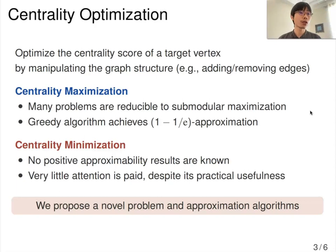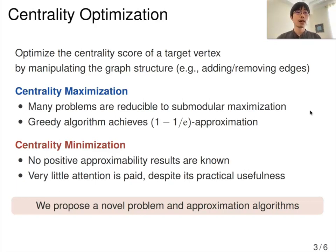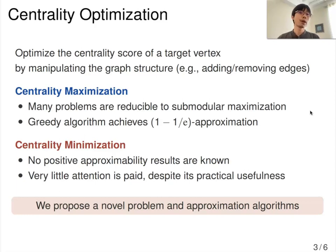In many real-world scenarios, we want to optimize the centrality score of a target vertex by manipulating the graph structure, like adding or removing edges around the target. There are two types of optimization: centrality maximization and centrality minimization. For centrality maximization, many problems are reducible to submodular maximization with a size constraint, so a simple greedy algorithm admits a 1 minus 1 over e approximation. On the other hand, for centrality minimization, there are no positive approximability results, so very little attention has been paid to centrality minimization despite its practical usefulness. In this study, we propose novel problems and approximation algorithms to overcome this situation.